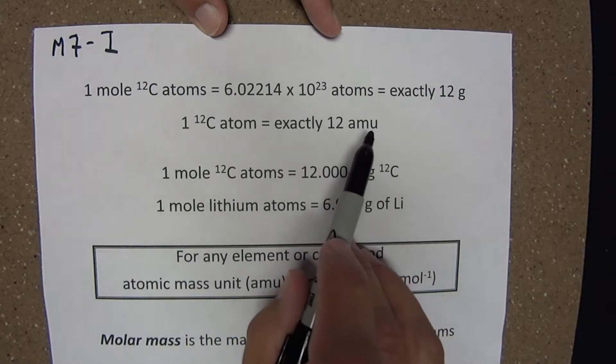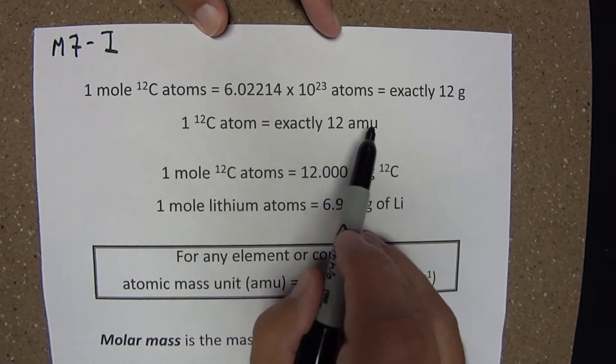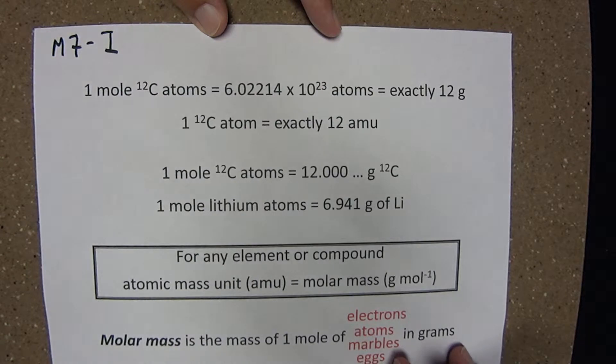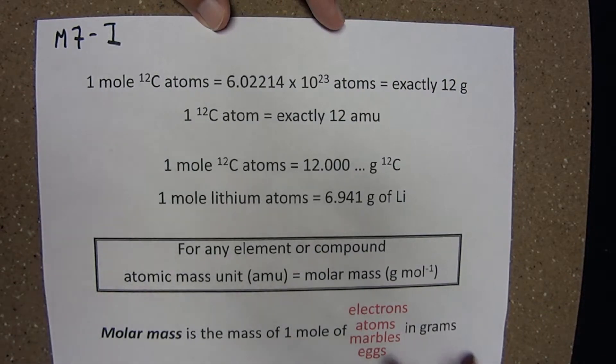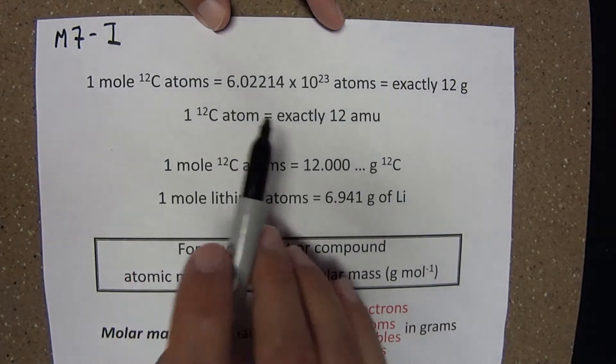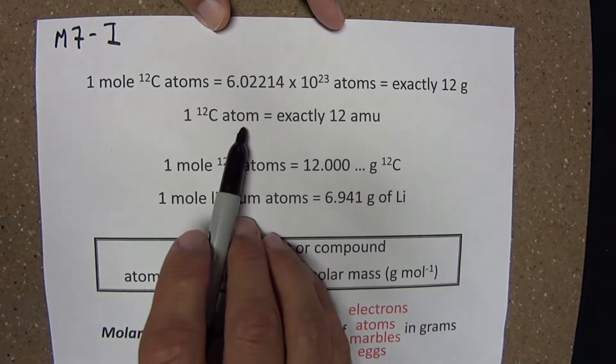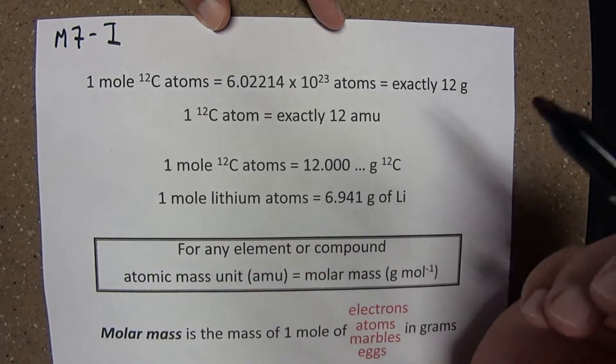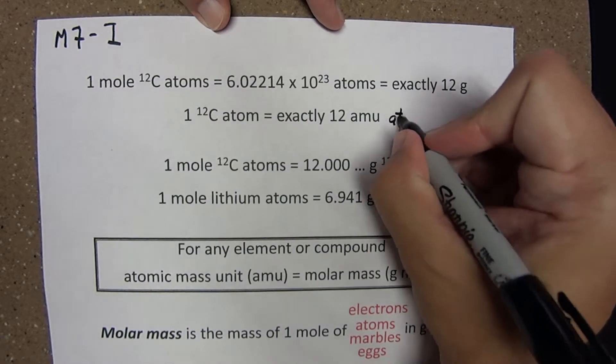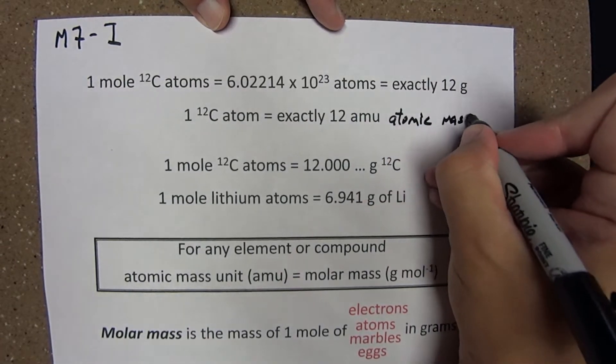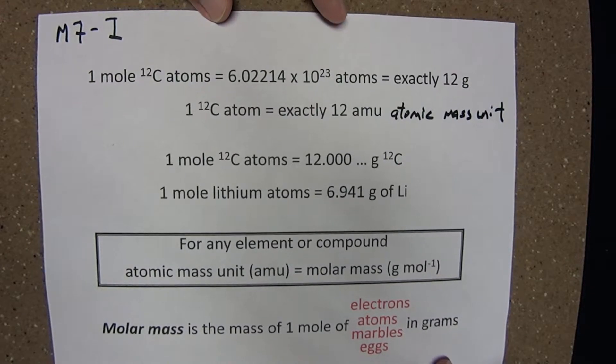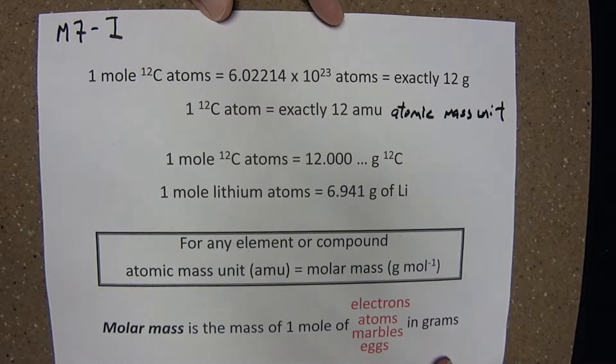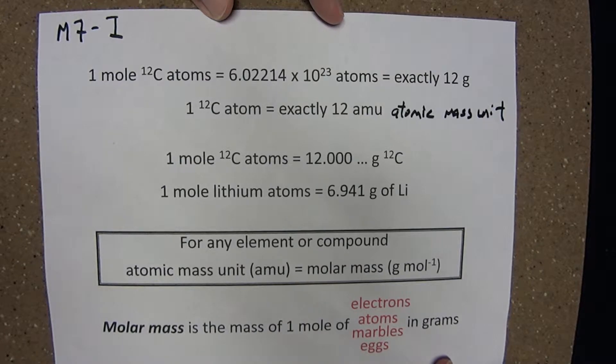Now, it's important you understand and can distinguish between the AMU, the atomic mass unit, and a molar mass in grams per mole. Both are defined in terms of carbon-12. But, one carbon-12 atom has a mass of exactly 12 atomic mass units. The atomic mass unit, the AMU, is a very small mass. One AMU is one-twelfth the mass of a single carbon-12 atom.